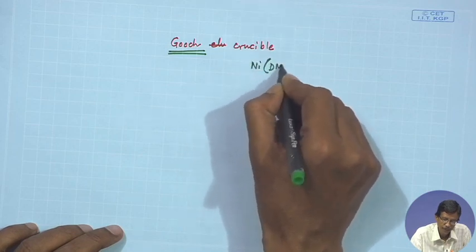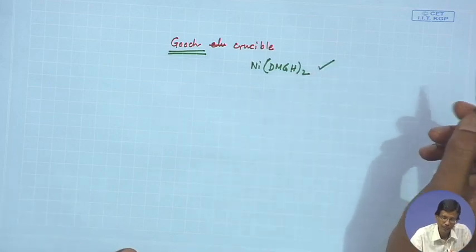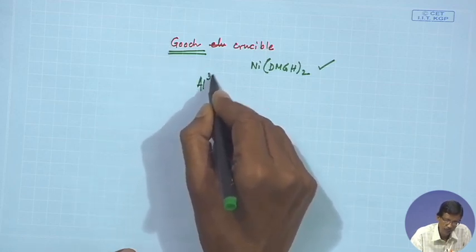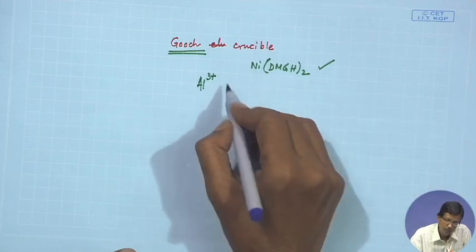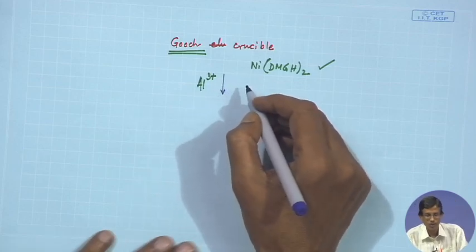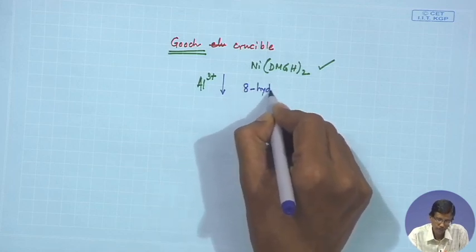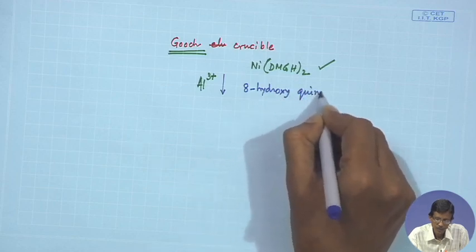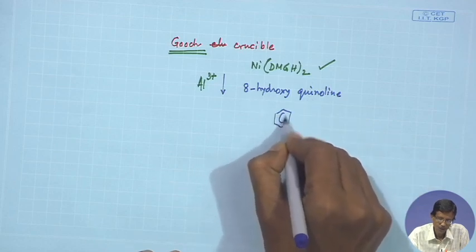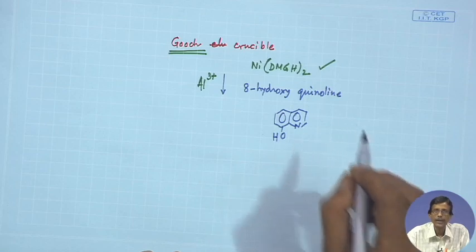We have Ni-DMG complex and we have seen that you can use this at a particular temperature. This gravimetric technique we will discuss in detail afterwards, but for now it can be precipitated out when aluminum is present in your unknown solution using 8-hydroxyquinoline, which is a chelating ligand.